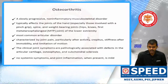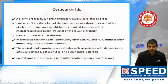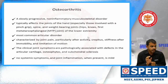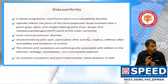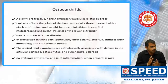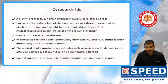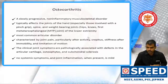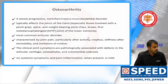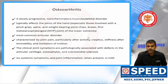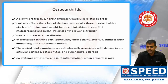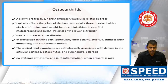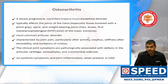Typically, it affects the joints of the hand, especially those involved in pinch grip. First MTP is a common joint involved, and DIP is also commonly involved. When the second, third, fourth, and fifth MCP are involved, think of other causes like hyperparathyroidism, hemochromatosis, and hypothyroidism.